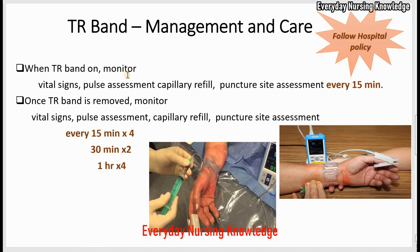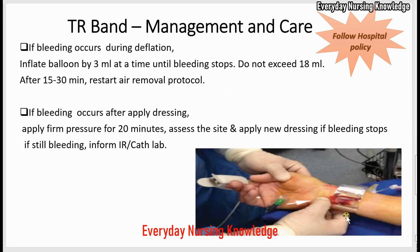For charting while TR-BAN is on, monitor vital signs and pulse assessment — keep the SpO2 probe on the index and thumb finger of the punctured arm, look for a good waveform and heart rate. Assess capillary refill and the puncture site every 15 minutes. If it is a neuro procedure, also perform a NIH Stroke Scale every 15 minutes. After TR-BAN removal, continue vital signs, pulse, capillary refill, and puncture site monitoring.